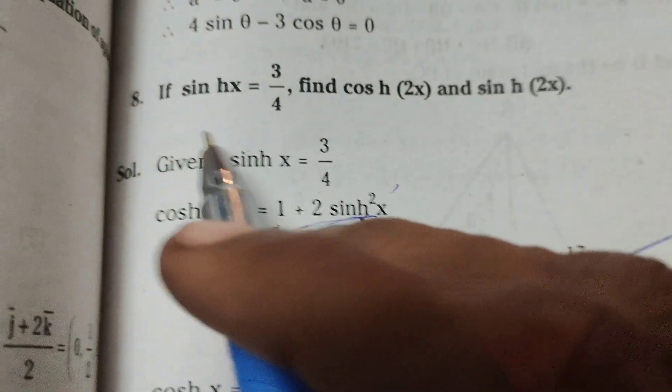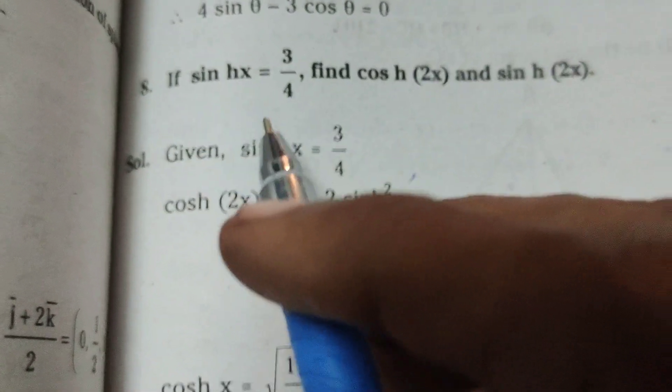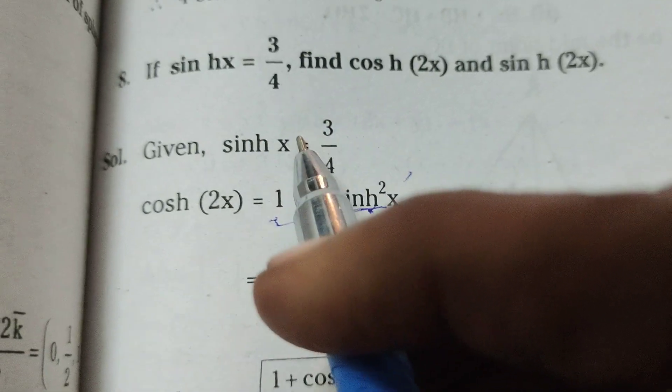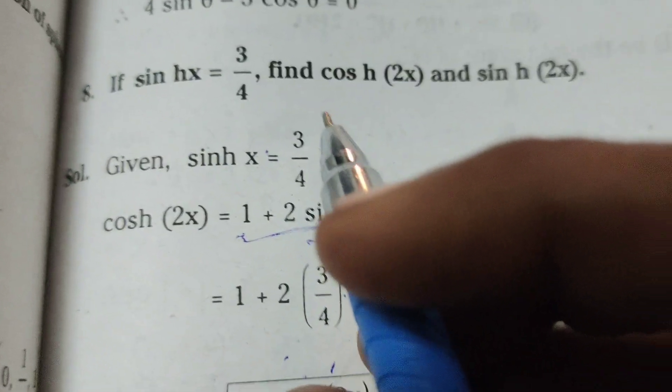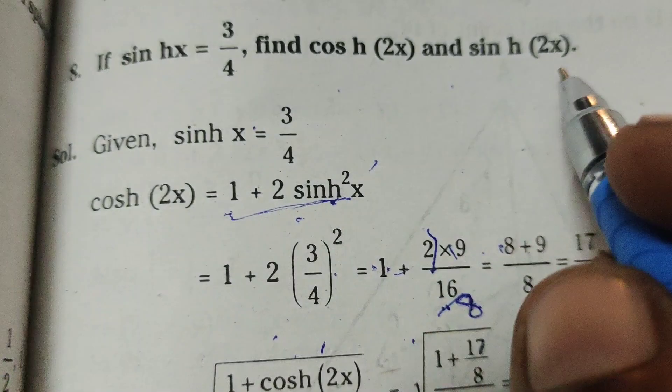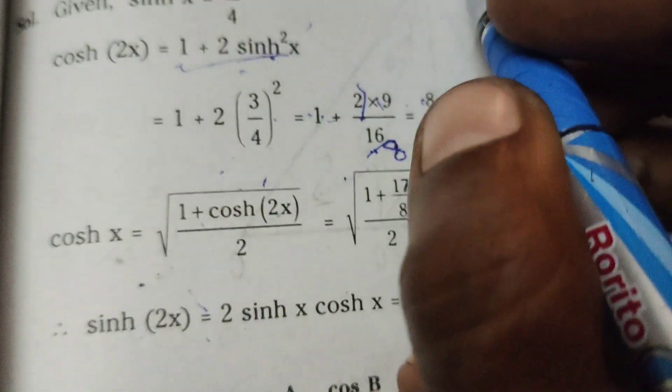Hi everyone, this is Dr. Aiti. Today we are going to explain: if sinh(x) equals 3/4, then find cosh(2x) and sinh(2x).